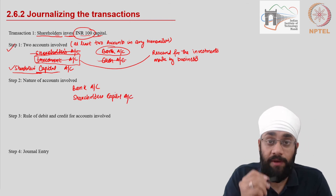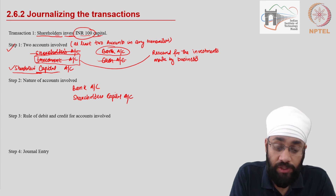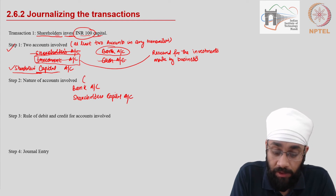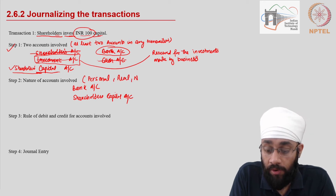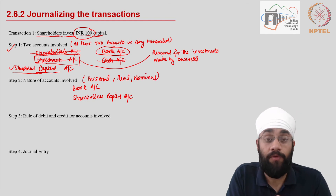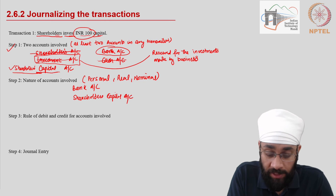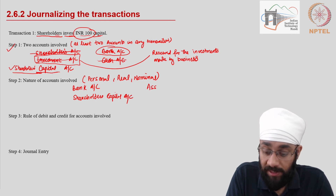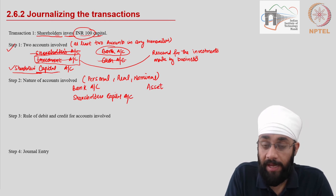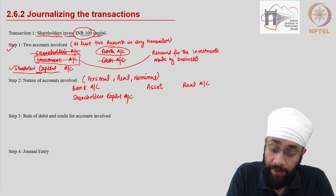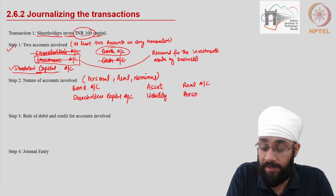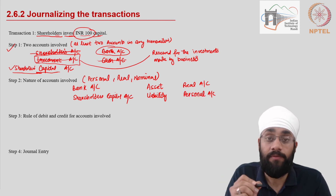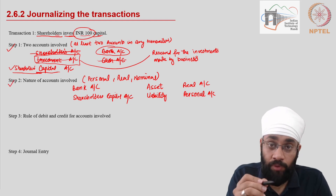Step one is done. Step two is to identify the nature of the account. By nature, I mean you have to identify whether these accounts are personal, real, or nominal. Bank account, as we know, is an asset — a current asset — and all assets are real accounts. Shareholders capital, on the other hand, is a liability, and all liabilities are personal accounts.